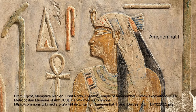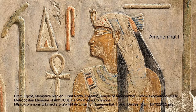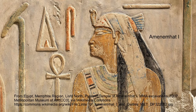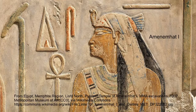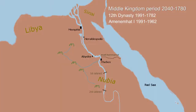Amenemhat reigned about 30 years, and the thing he is most noted for is setting up a co-regency with his son. In his 20th year he made his son co-regent king alongside him, and his son served as a general in the army, leading military campaigns while the father stayed in the palace. While he was out on campaign there was a coup in the palace and Amenemhat the First was killed. His son Senusret the First became king.